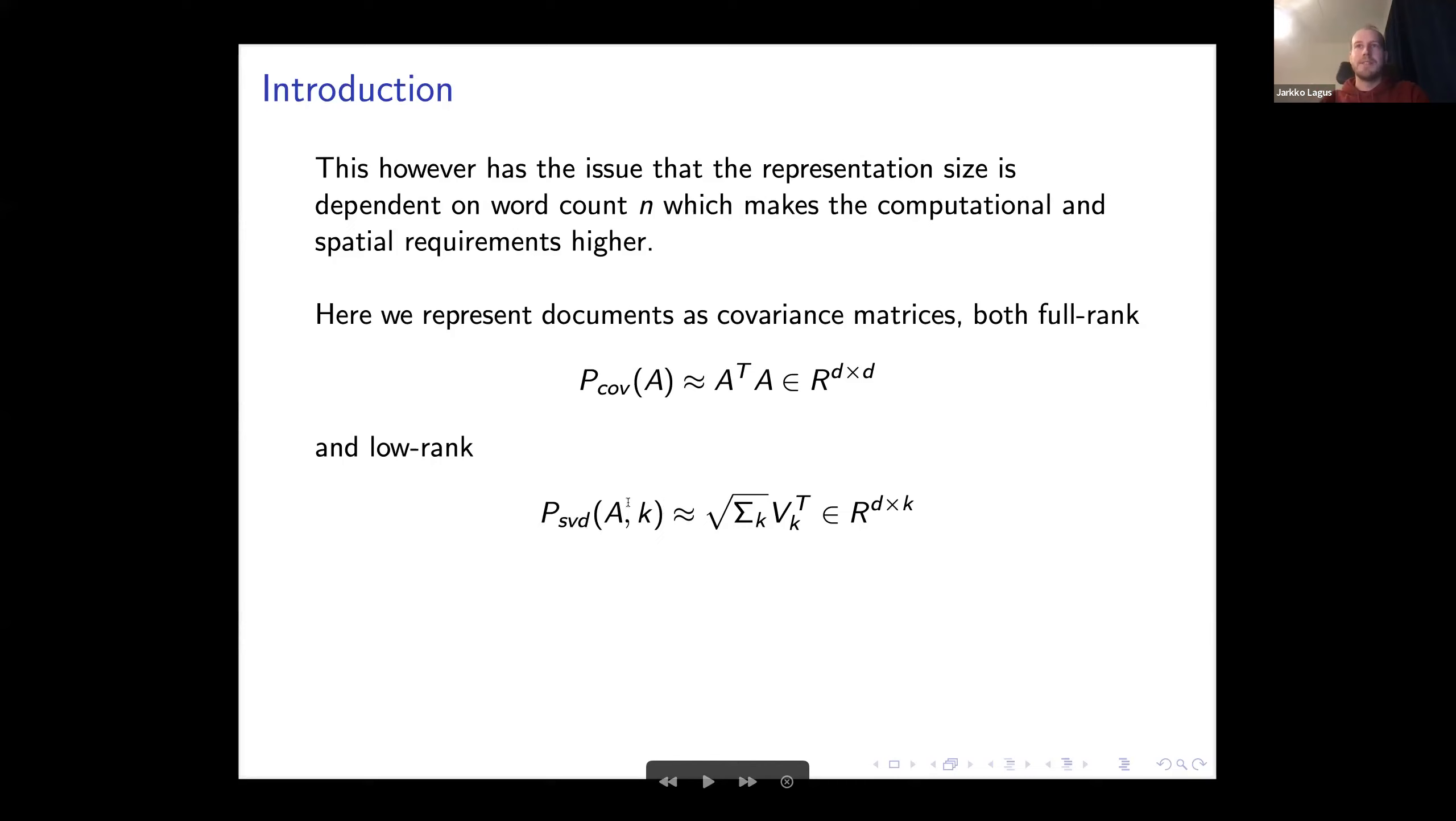Here we use SVD, so this allows us to drop the dimensionality down to D times K, where K is the amount of components that you wish to preserve. For the baseline comparisons, we use the usual mean pooling, where we just get a vector out of it.